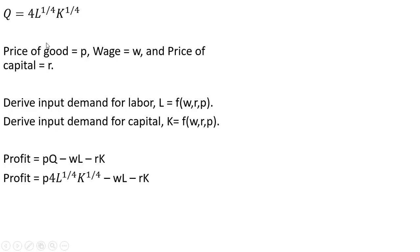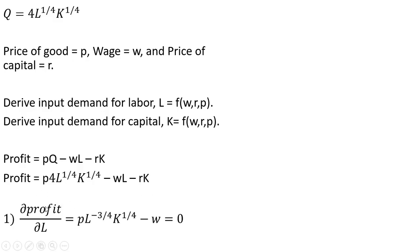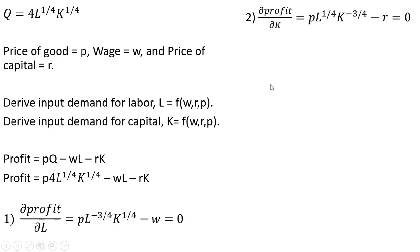Substituting in the production function for Q, we have this expression. We are going to take two partial derivatives. We're going to take the partial derivative of the profit function with respect to labor and get this result, setting it equal to 0. We will take the partial derivative of the profit function with respect to capital and get this result, setting that equal to 0.